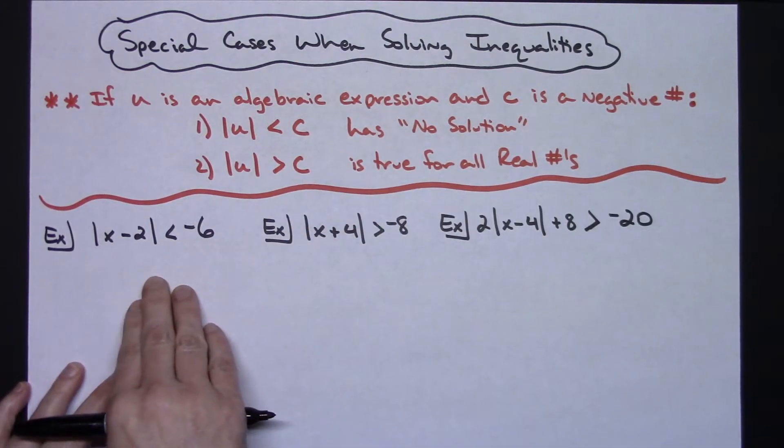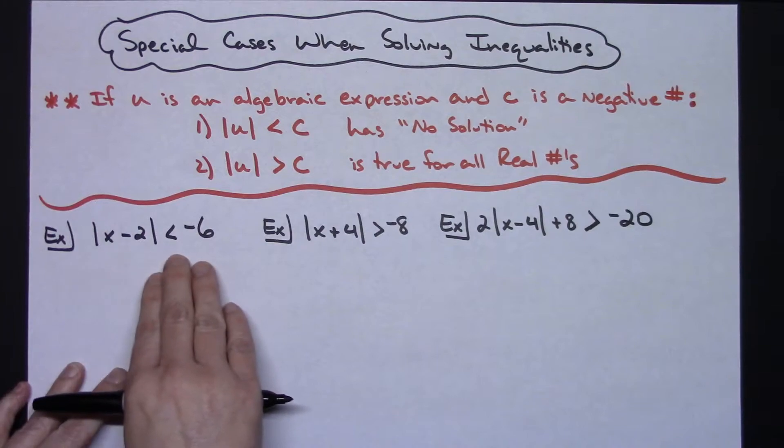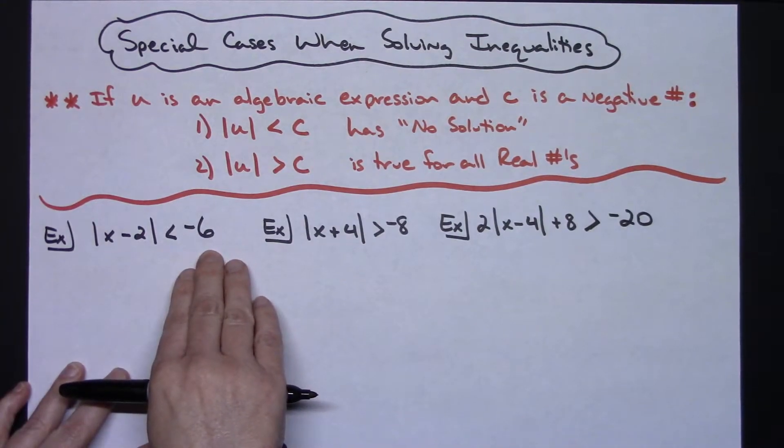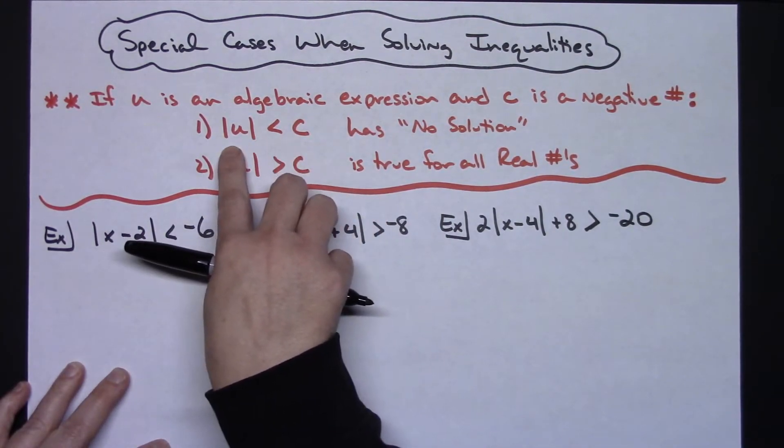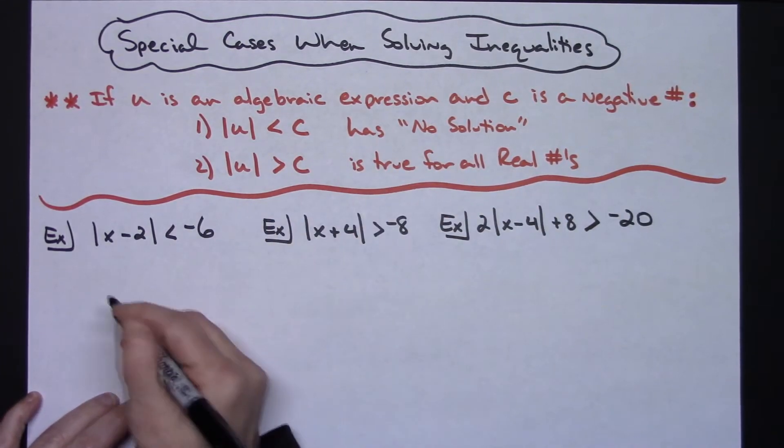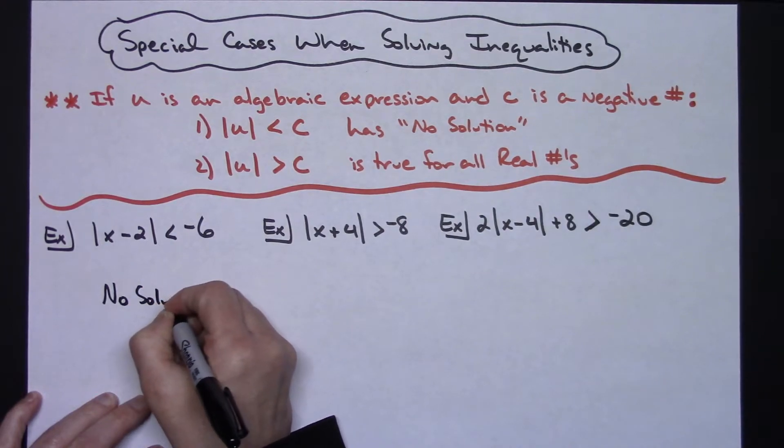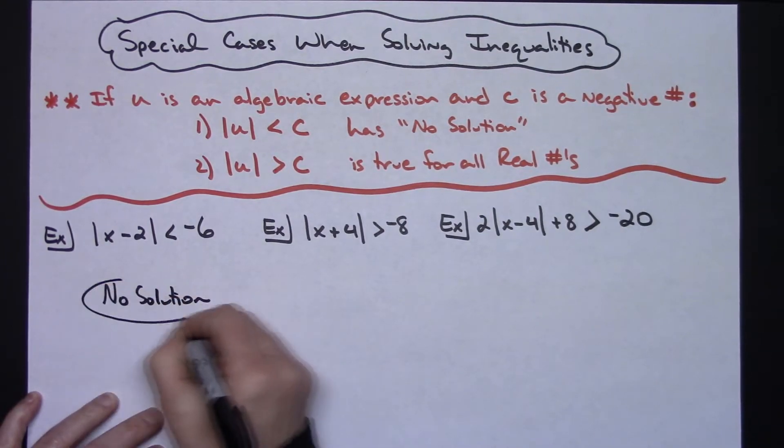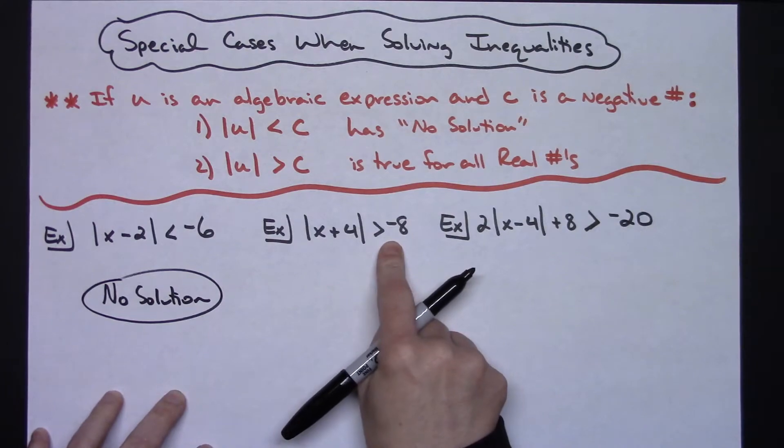Now taking that and working them out. Absolute value bars are isolated, I've got less than a negative number. When I've got an algebraic expression and it's less than a negative, I know that it's no solution. So right away I can just look at that and go, okay, no solution. That's simple.